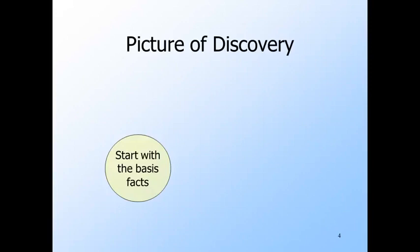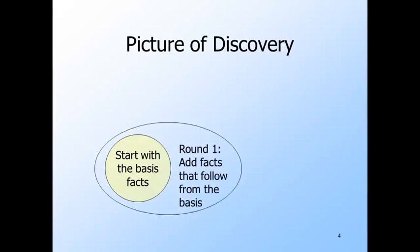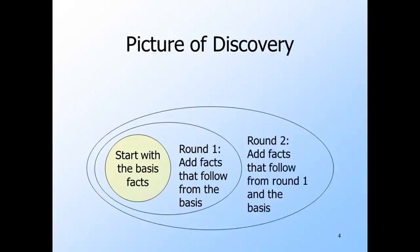Here's the image of discovery algorithms we should keep in mind. We start with some facts that you get from the basis. We expand the set of facts you know by using the basis facts — this is the first round. For the second round, we expand the set of known facts further by using both the basis facts and the facts you discovered at round one. You keep going until at some round you have no more facts that can be discovered.